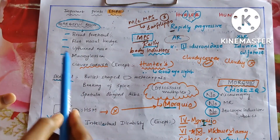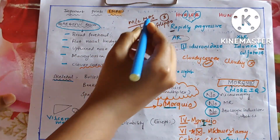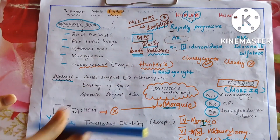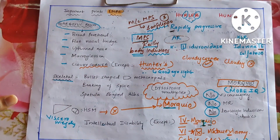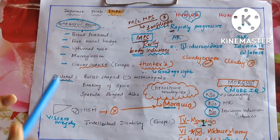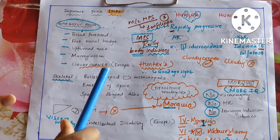This completes MPS in detail. Overall in MPS, the most common is Sanfilippo — that is the third one, MPS 3.